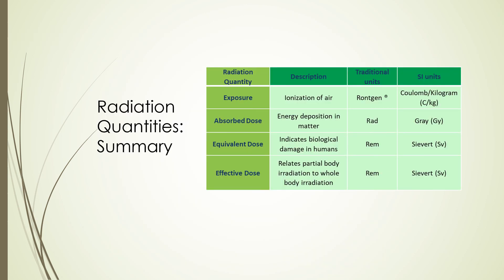Here is a summary of the quantities we have just learned about. Exposure describes the ionization of air; the traditional unit is the Röntgen and the SI unit is coulomb per kilogram. Absorbed dose is the energy deposited in materials and has the traditional unit of rad and the SI unit of gray, where one gray is one joule per kilogram. Equivalent dose indicates biological damage in humans; the traditional unit is the REM and the SI unit is sievert. Effective dose relates partial body irradiation to whole body irradiation; the traditional unit is REM and the SI unit is sievert.